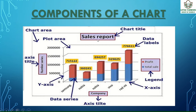Next is the chart title. For example, 'Sales Reporting' is the title of the chart, representing the document's purpose. Next are gridlines — these are horizontal or vertical lines that extend across the plot area. They depend on the selected chart type and make it easier to read and understand the values.